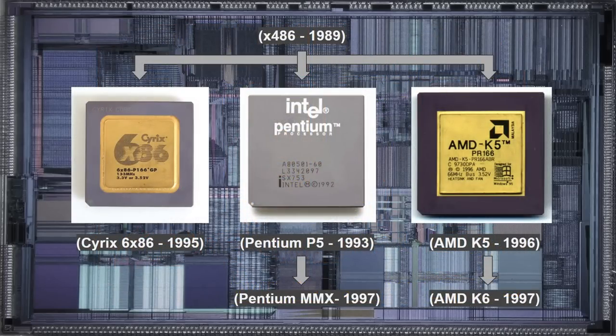Let's begin by taking a trip back to 1996, where the PC marketplace was dominated by the 32-bit x86 processors. At the time, the widely successful 486 processor was 7 years old. Intel's follow-up, the Pentium, had been on the market for 3 years. Cyrix's 5x86 and 6x86 had been on the market for about a year, and AMD had just released their new K5 processor featuring out-of-order execution. A year later, in 1997, both Intel and AMD would release their follow-up processors: the Intel Pentium MMX and the AMD K6.